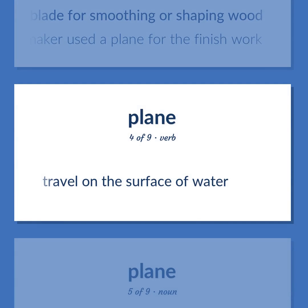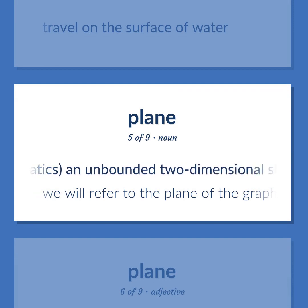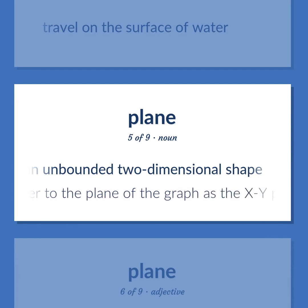Travel on the surface of water. Mathematics: an unbounded two-dimensional shape. We will refer to the plane of the graph as the XY plane.